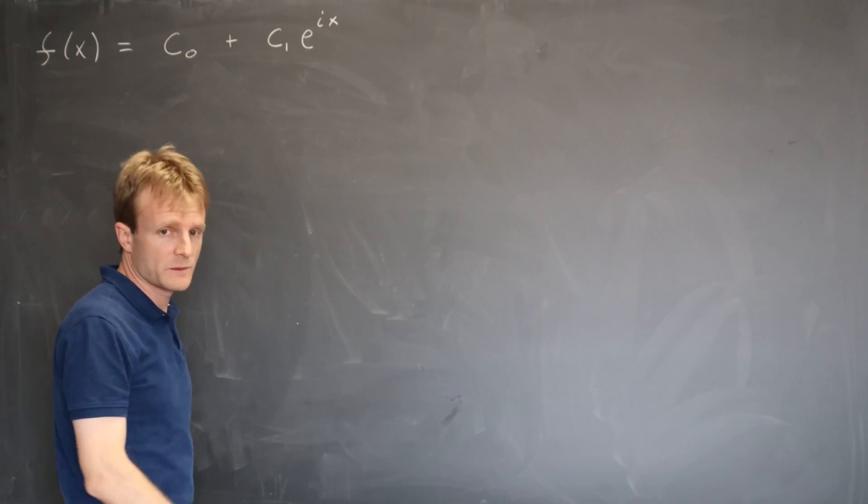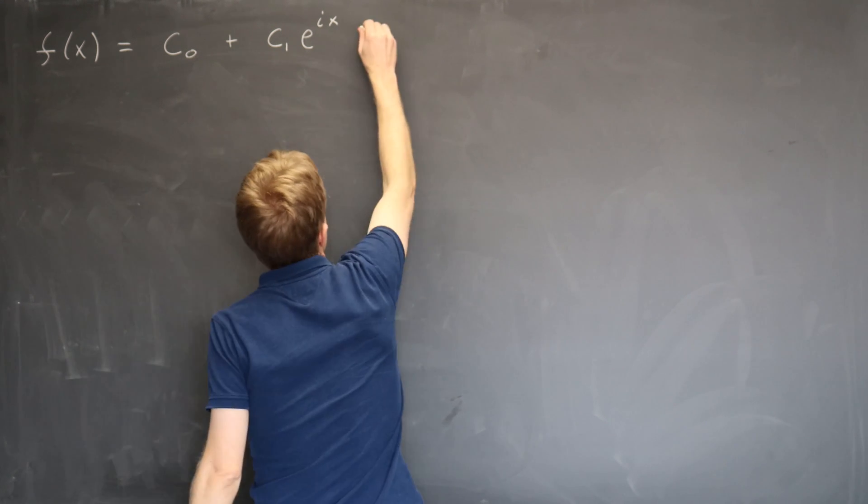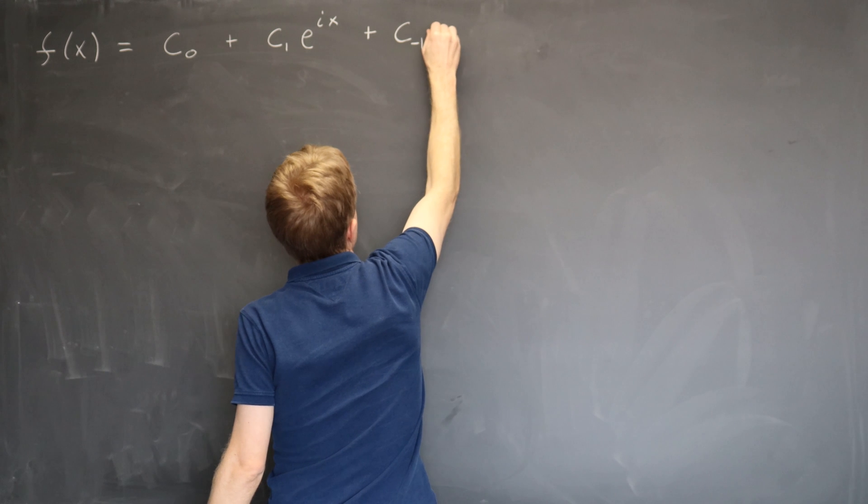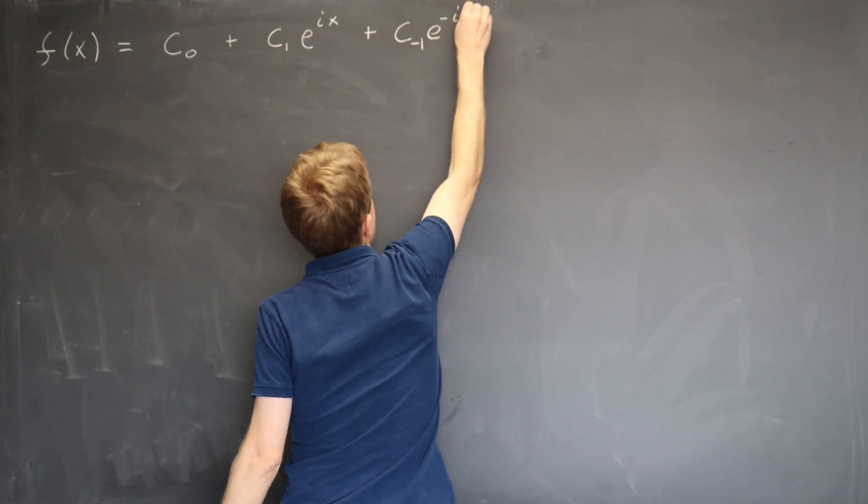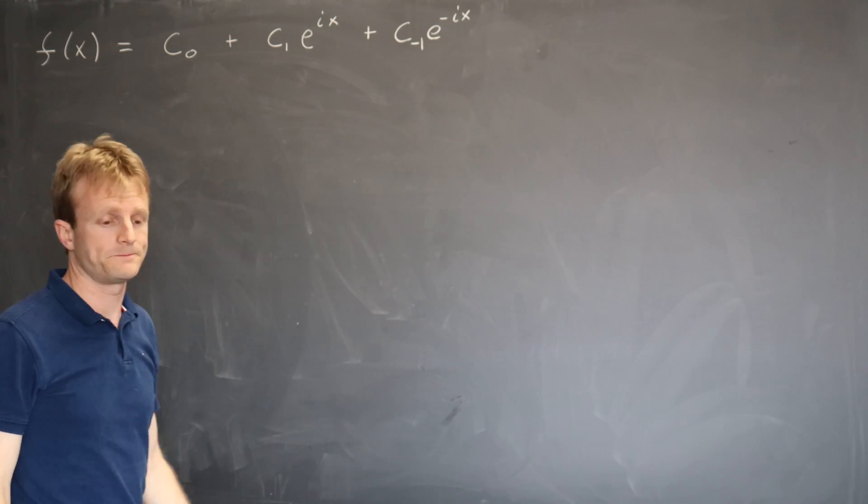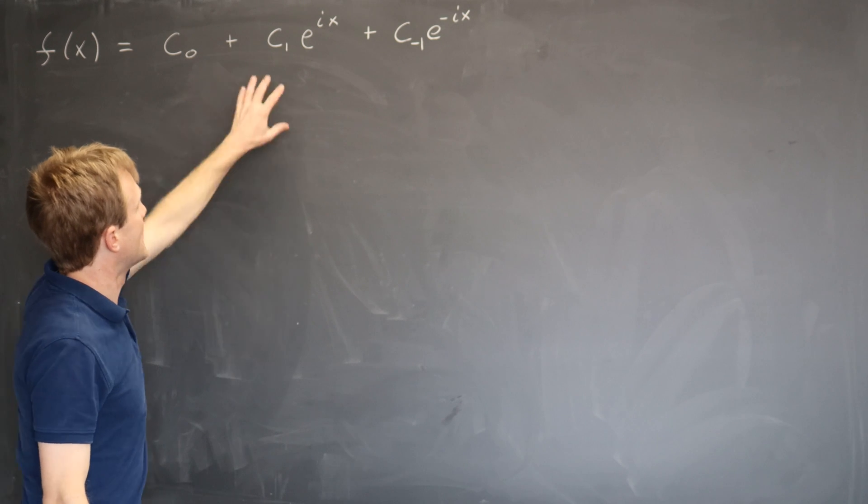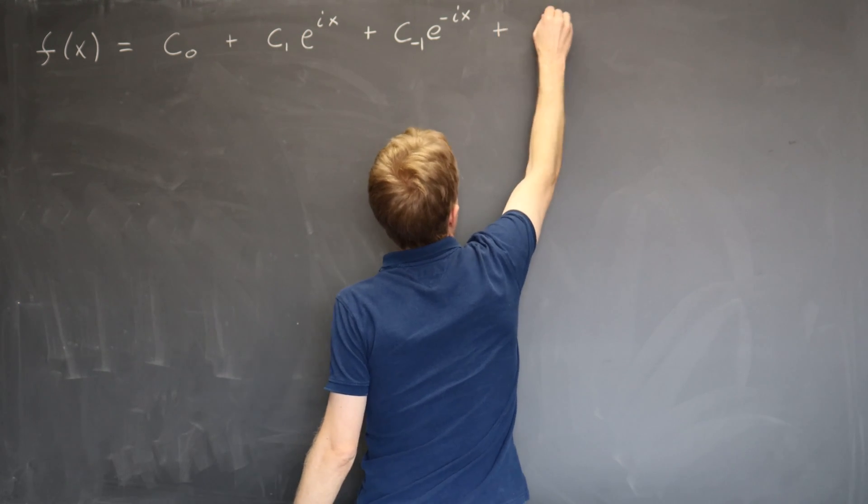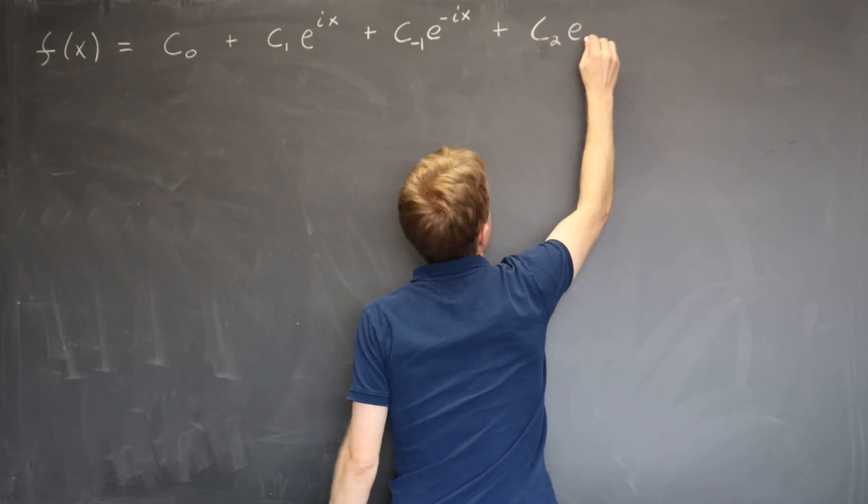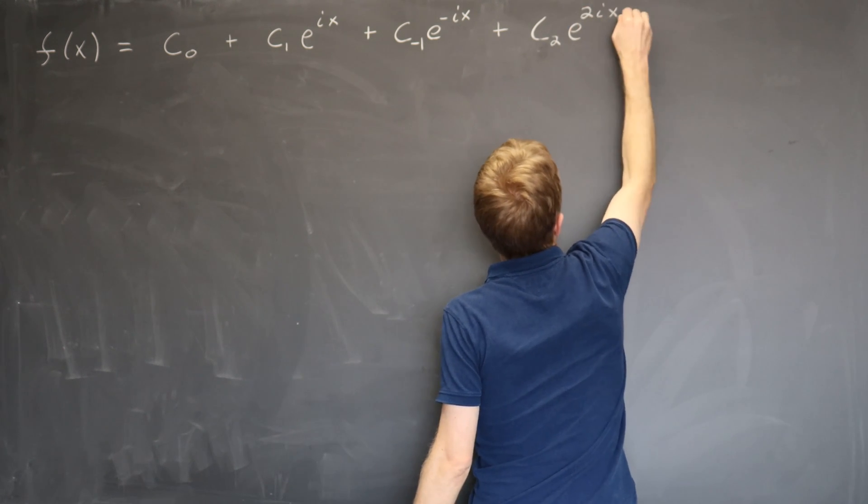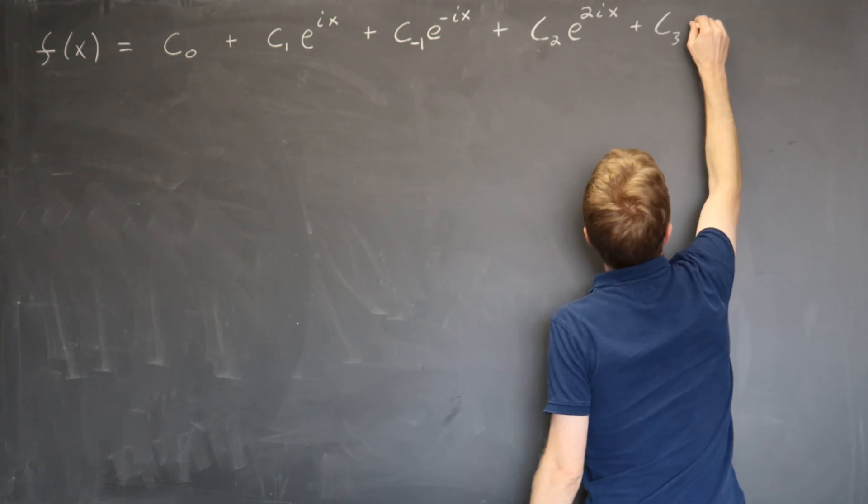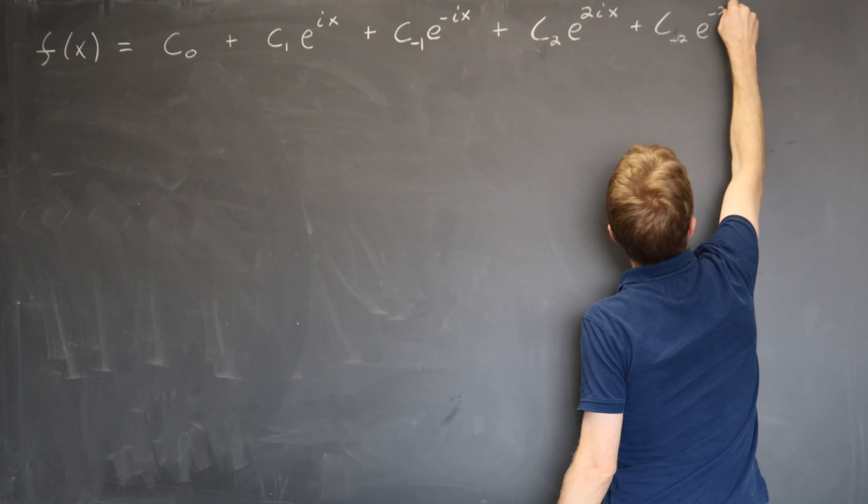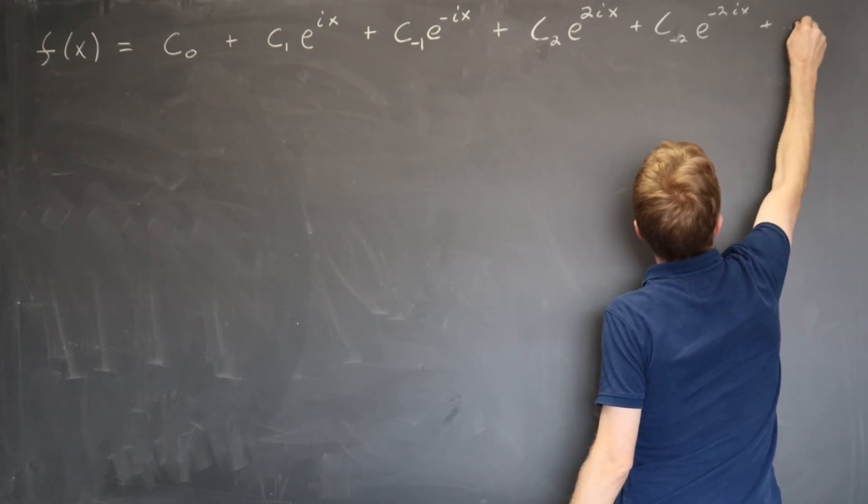If you instead use the complex exponential form. Remember, e to the ix is just cosine x plus i sine x. So that does have the sines and cosines in it. If you use the exponential form, things organize themselves much more nicely. But instead of cosine and sine, we need to use e to the ix and also e to the minus ix.